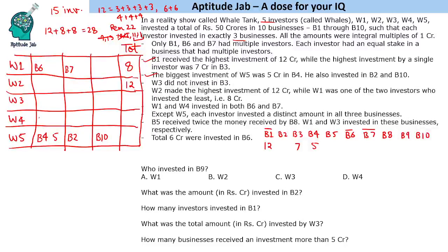For the remaining 22 crores: 9+13 is not possible (max is 12), and 10+12 is not possible since only one investor can have 12. So the only possibility is 11+11, meaning w3 and w4 each invested 11 crores. Except w5, each investor invested distinct amounts in all three businesses. W5 invested the same amount in two businesses — with 5 crores in one — making his total 11 crores, so he invested 3 crores each in his other two businesses.